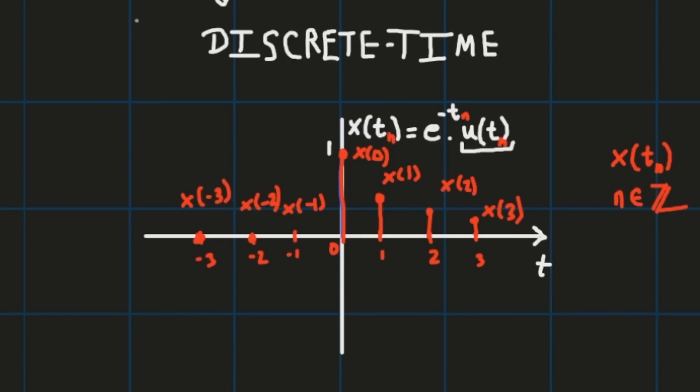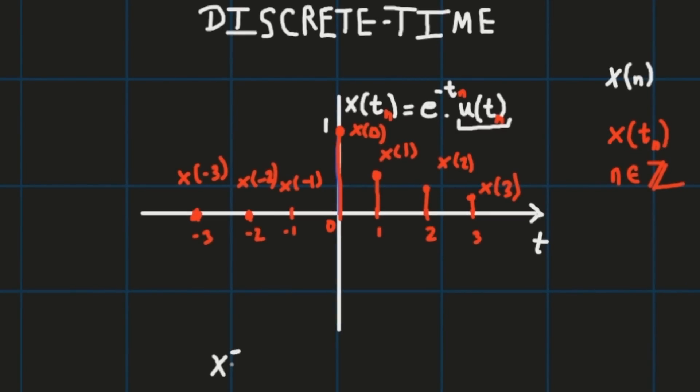Now to emphasize the discrete time nature of a signal, we shall denote the signal as x[n] instead of x(t_n), where x[n] is the sample that corresponds to x at time instance t sub n. So if I were to say for example x - you might see me use brackets from time to time and you might see me use parentheses from time to time - x(n) as such, this by definition is the signal x sampled at time instance t_n.